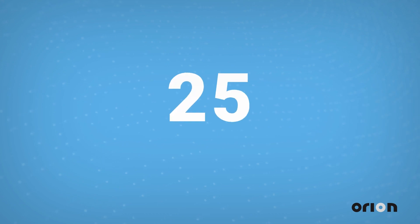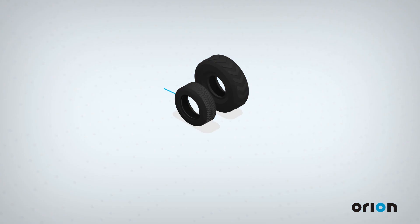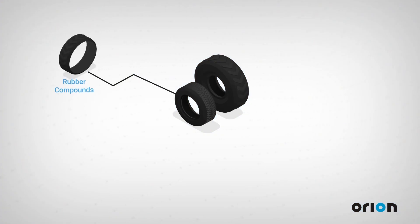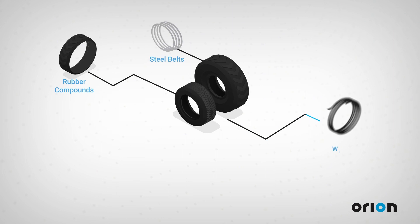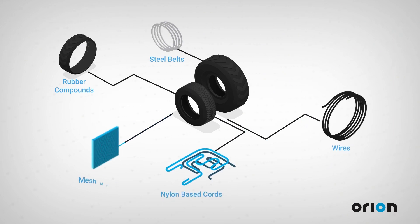Tires contain up to 25 components, including several rubber compounds, as well as steel belts, wires, nylon-based cords, and mesh material.